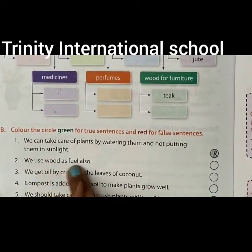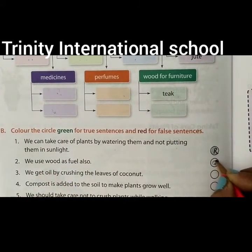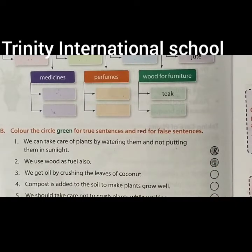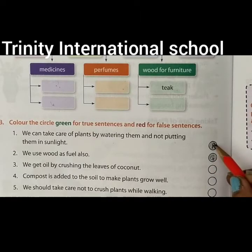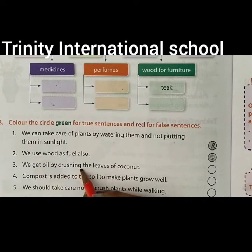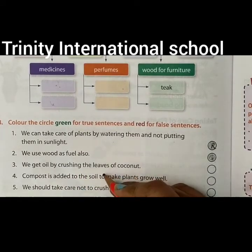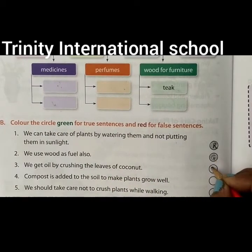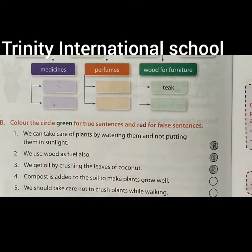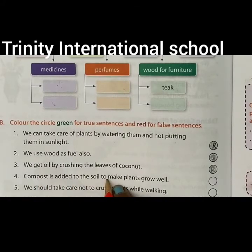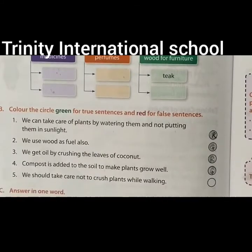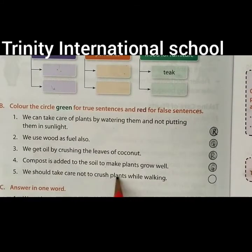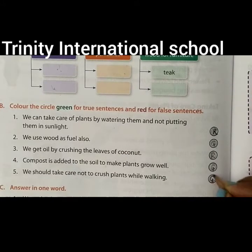We use wood as fuel also — this is a correct statement, so color it green. We will get oil by crushing the leaves of coconut — this is false, because we crush seeds not leaves, so color it red. Compost is added to the soil to make plants grow well — this is a true statement, so color it green. We should take care not to crush plants while walking — this is also a true statement, so color it green.